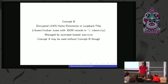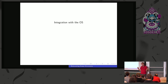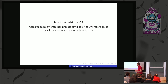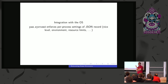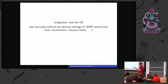Concept A (JSON user records) and Concept B (homed) are related but independent: you can use A without B, but B implies A. There's also integration with PAM and a couple of other components. I think we only have about 10 minutes left, so let's focus on questions.